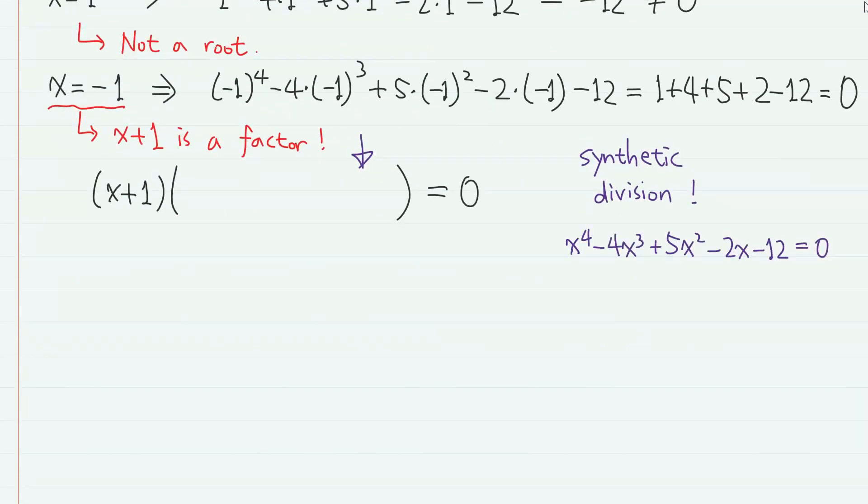So we write the coefficients, 1, minus 4, 5, minus 2, and minus 12. And since we are dividing with x plus 1, we write minus 1 here. Then, this 1 just comes down, and minus 1 times 1 gives minus 1. So if we add these 2, we have minus 5. And minus 1 times minus 5 gives 5. So we have 10.